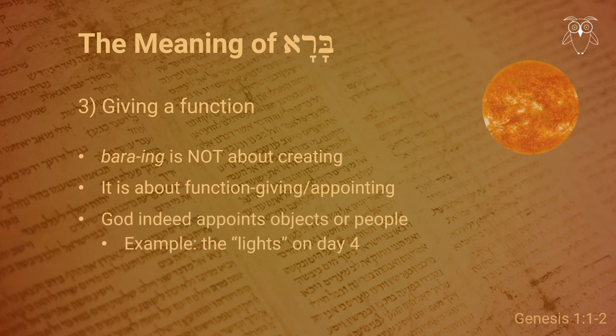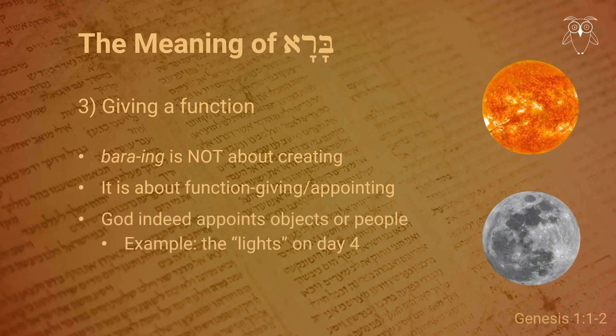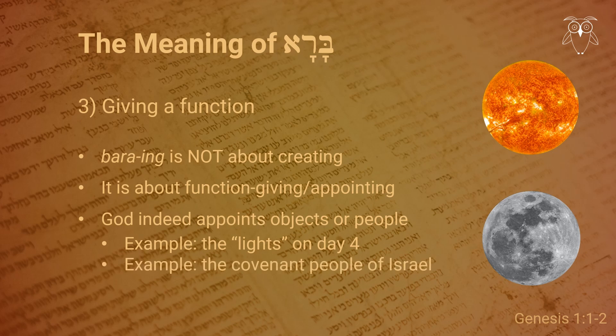One clear example is the lights in Genesis 1 — the great light and the small light that God creates on the fourth day, after which he places them up high, with the function of illuminating the world by day and night respectively, and to function as a calendar. Clearly, this is God not just making the sun and the moon, but also giving them a function or appointing them to a position. In a similar way, it could be argued that God created the people of Israel by appointing them to become his covenant partners.